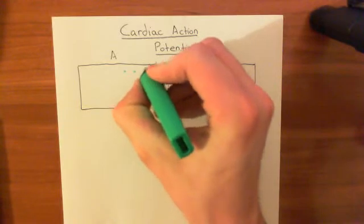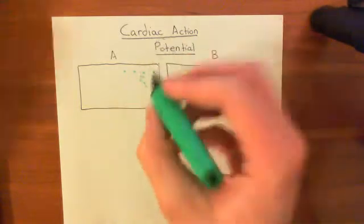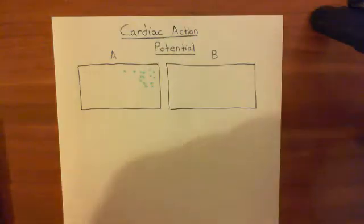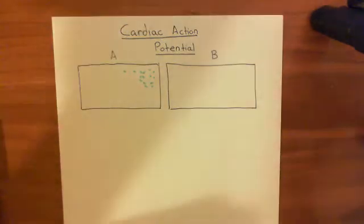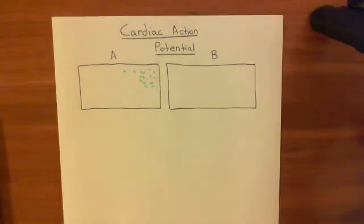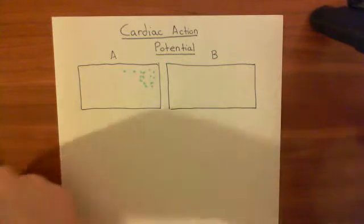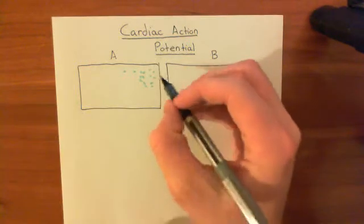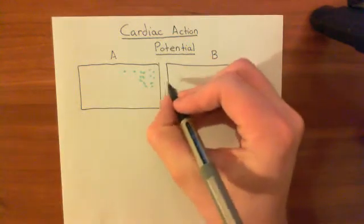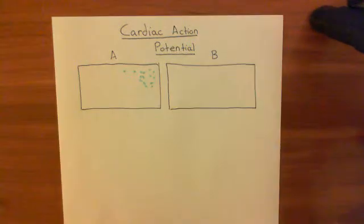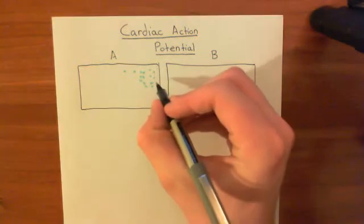These sodium ions are responsible for the depolarization of the electrical potential difference across the membrane because they are raising the electrical potential of the intracellular compartment, since they are positively charged. What you have between two adjacent cardiomyocytes like this is an electrical window known as a gap junction.